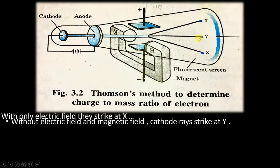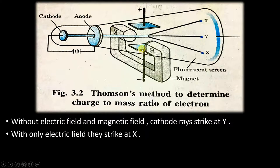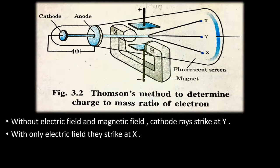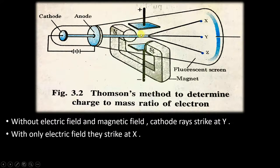When only the electric field is connected — magnetic field is not connected — the cathode rays get attracted towards the positively charged plate. This is because cathode rays are negatively charged, and opposite charges attract. Therefore, the cathode rays are deflected upward and instead of hitting the screen at Y, they hit the screen at X. So the electric field is used to change the direction of the cathode rays.